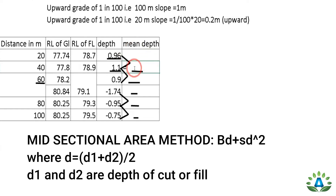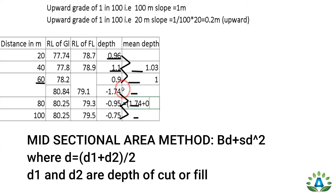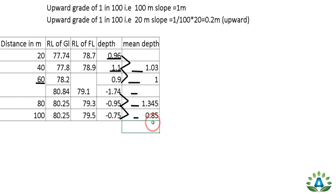Computing the average depths: (0.96 + 1.1) / 2 = 1.03 (fill average between 20m and 40m). (1.1 + 0.9) / 2 = 1.0 (fill average between 40m and 60m, fill portion). The cell between the 60m fill and 60m cut is left blank. (1.74 + 0.95) / 2 = 1.345 (cut average between 60m and 80m). (0.95 + 0.75) / 2 = 0.85 (cut average between 80m and 100m).